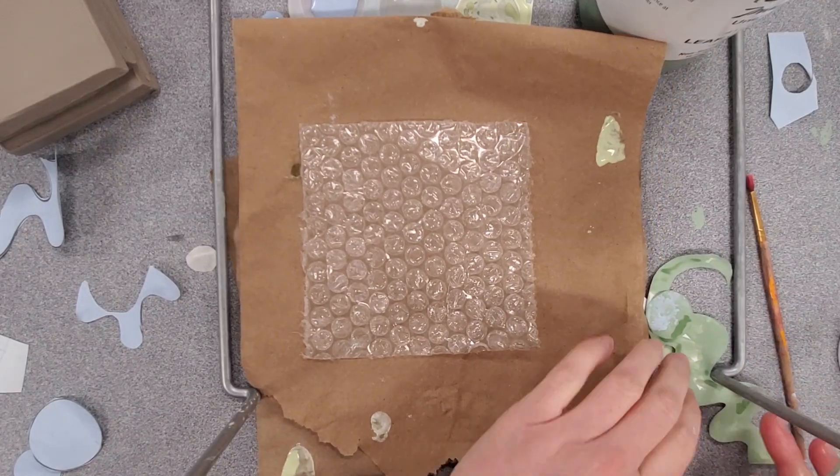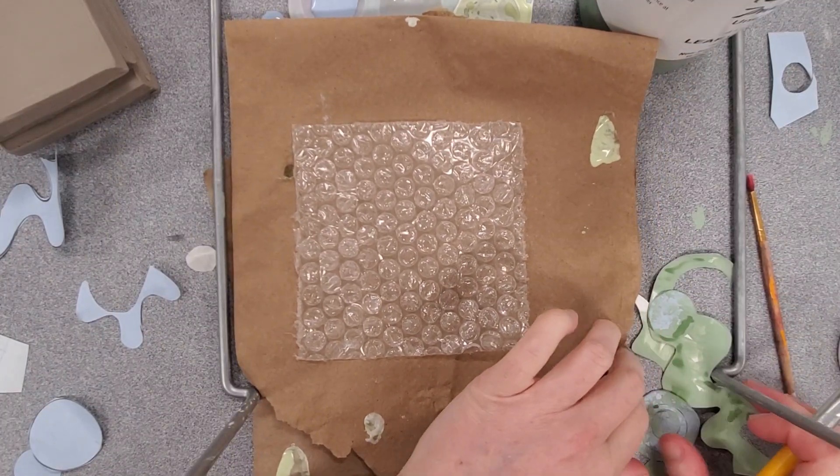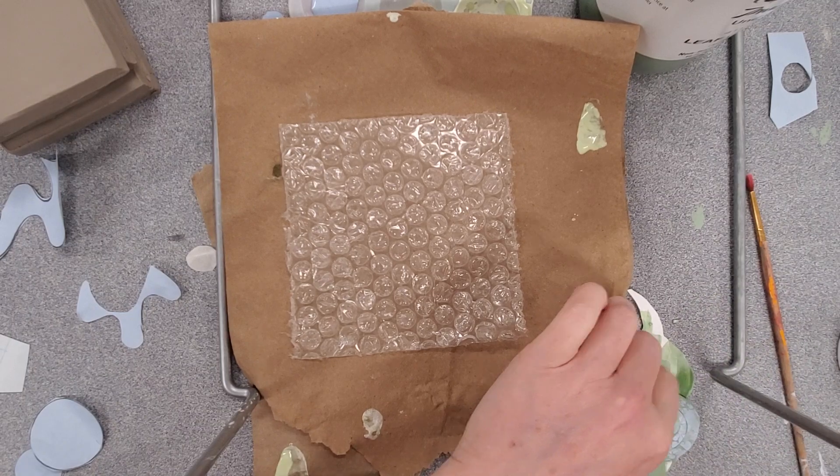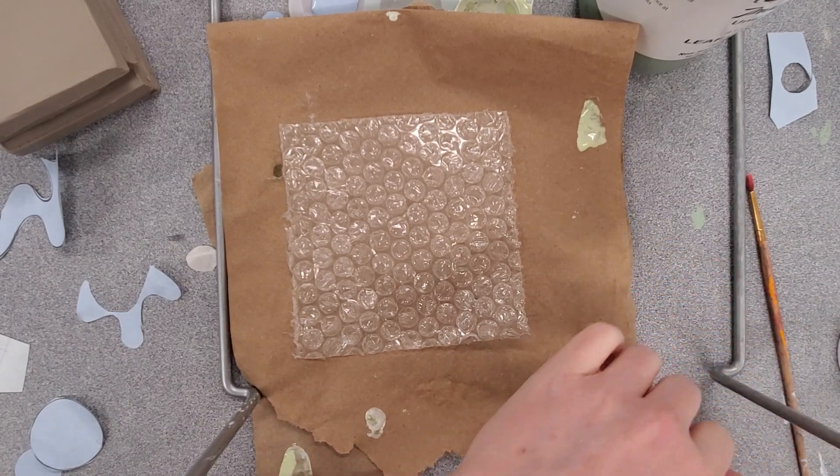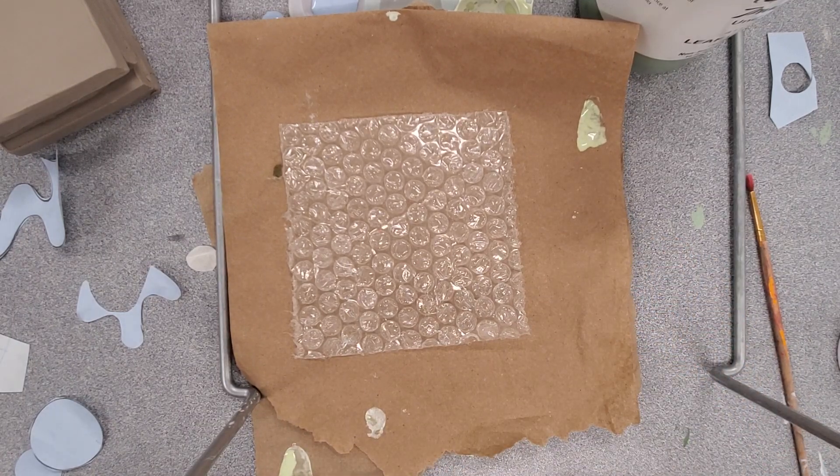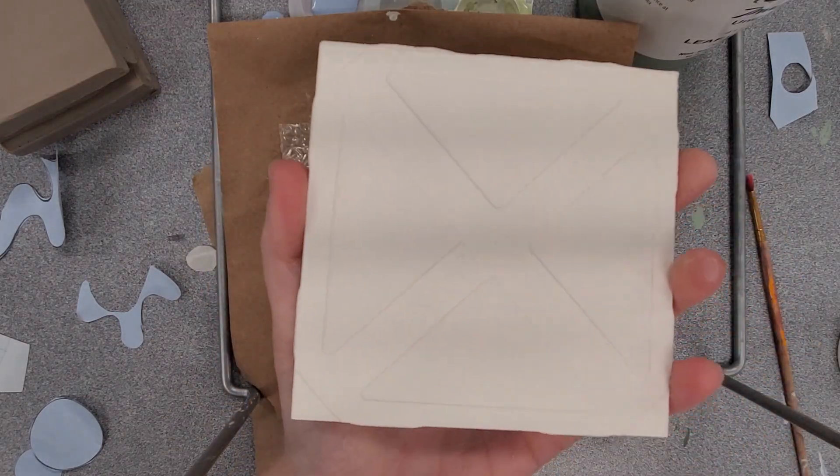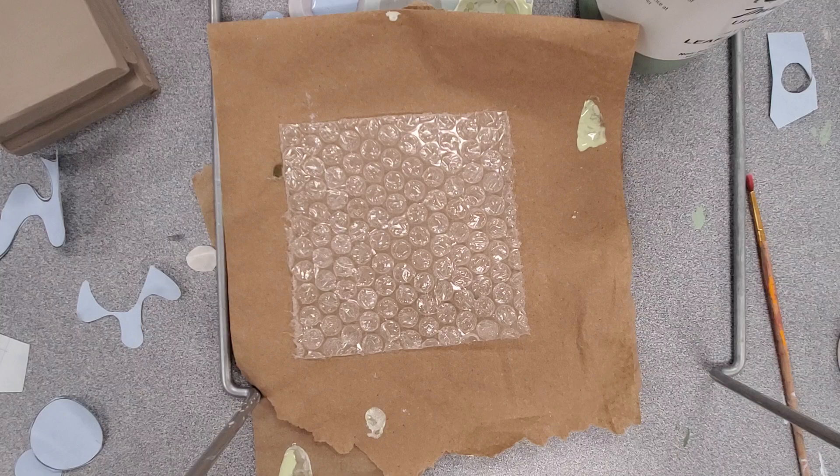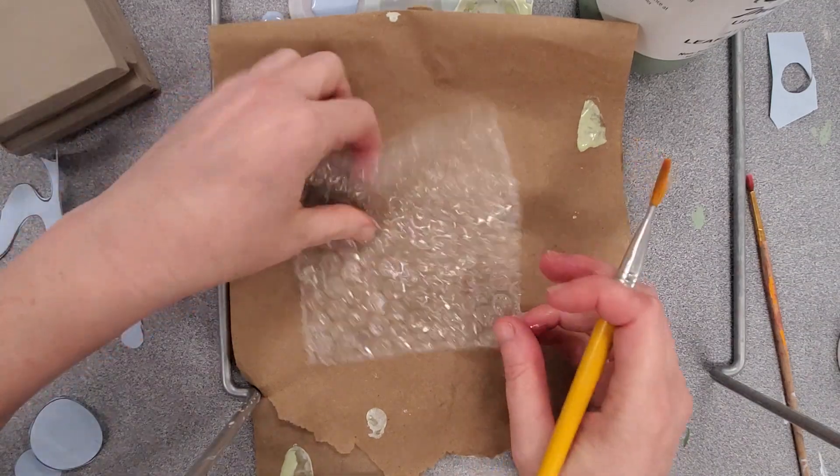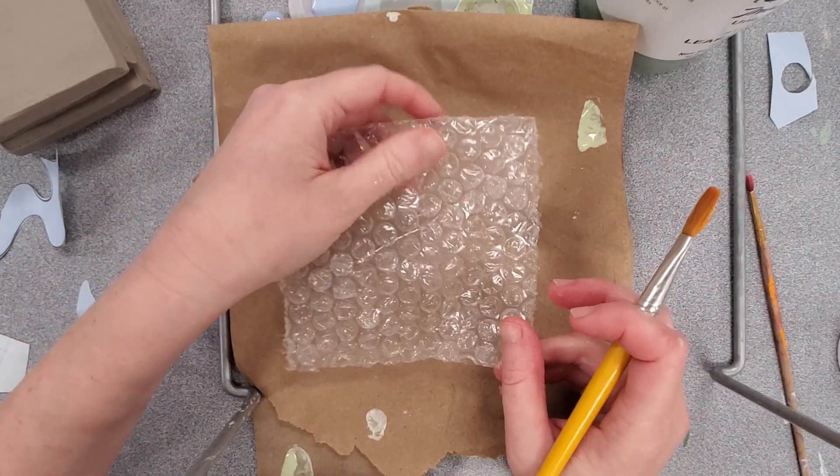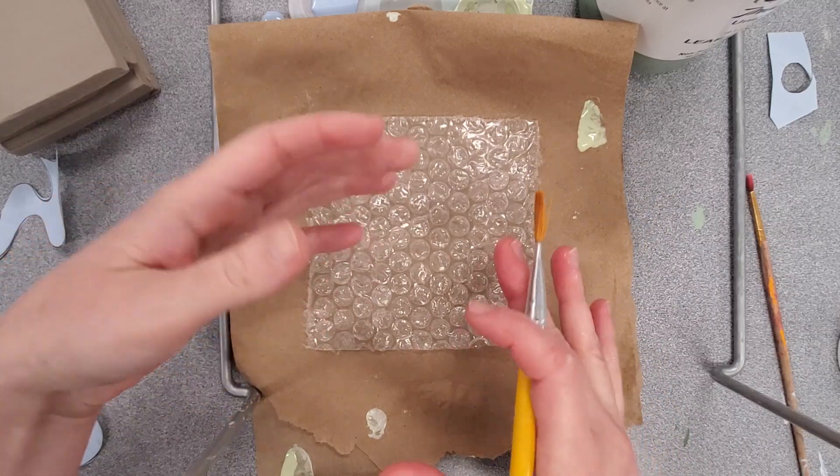For this video we're going to do what's called a textured resist. We're going to create a texture in the background of our bisque tile that has already been fired one time. We're going to use this bubble wrap texture as our background color and texture.